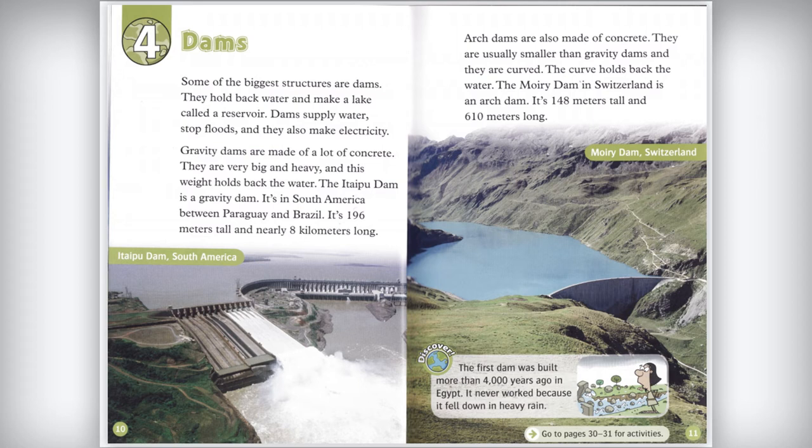The Itaipu Dam is nearly eight kilometers long. Arch dams are also made of concrete. They are usually smaller than gravity dams and they are curved — the curve holds back the water. The Mauvoisin Dam in Switzerland is an arch dam. It's 148 meters tall and 610 metric tons.